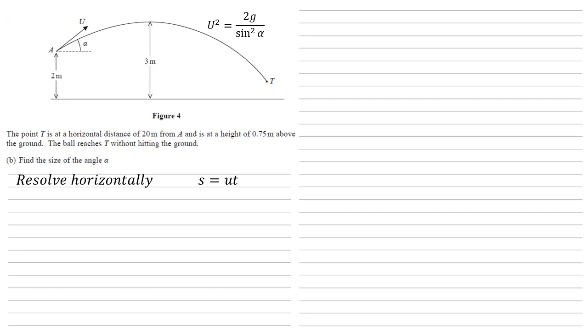S is 20 metres from A to T. Our initial velocity is U cos alpha and we're trying to find T. Rearranging that gives us T equals 20 over U cos alpha.